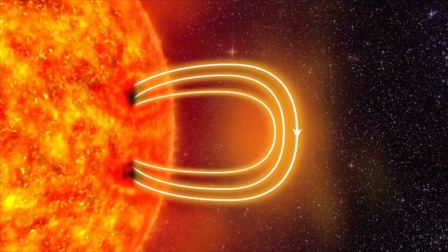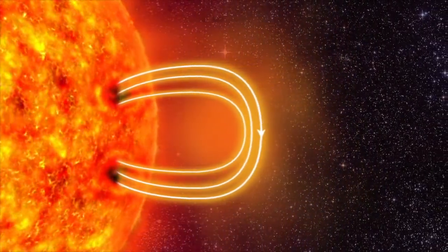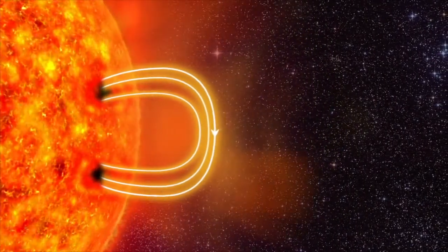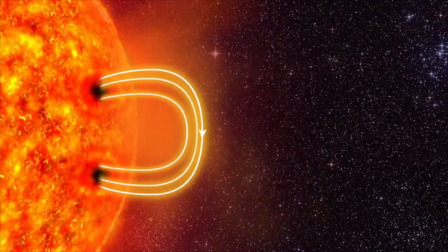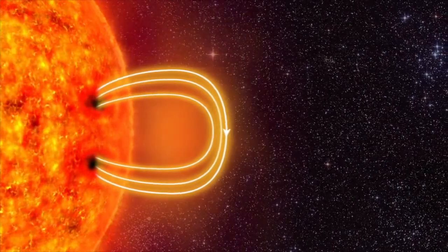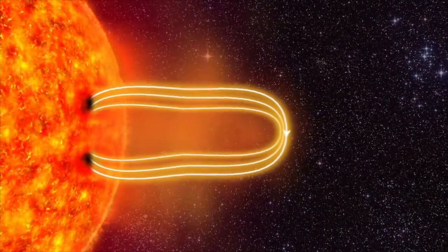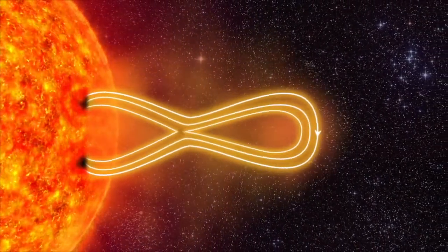The electrically charged gas is called plasma. The plasma drags the magnetic field further outwards. The magnetic field stretches and twists like a rubber band, and then the rubber band breaks.